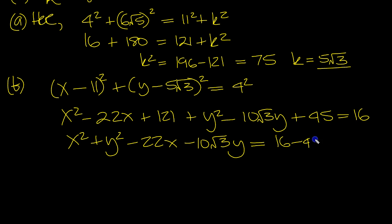16, minus 45. Oh, let's just leave it on the other side. So what have we got? We've got 121, minus 16, 121, 45, 166, 150. There we go. That's the equation of the circle.